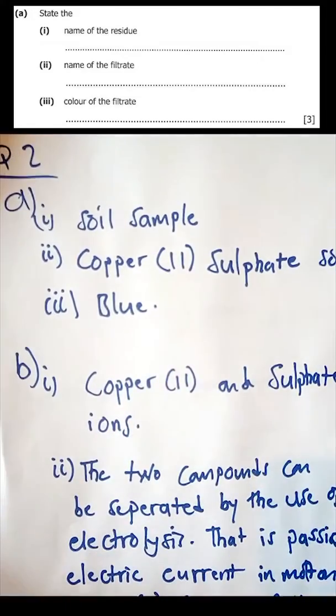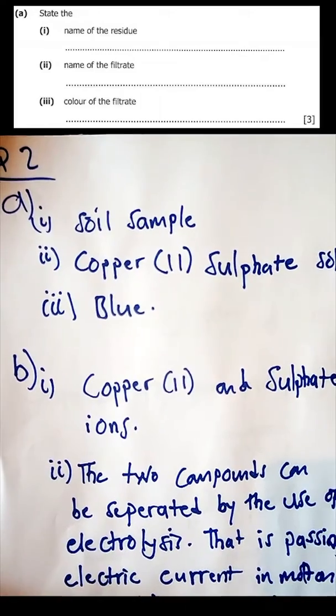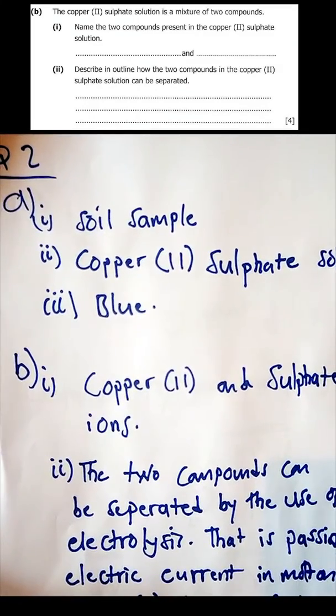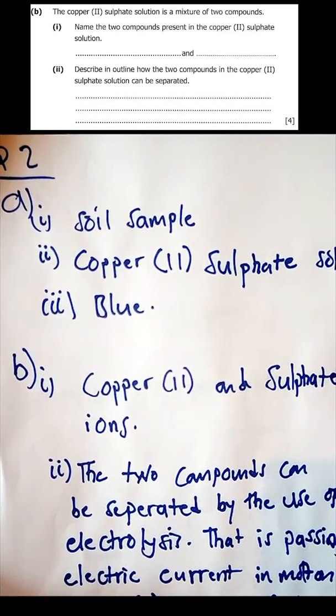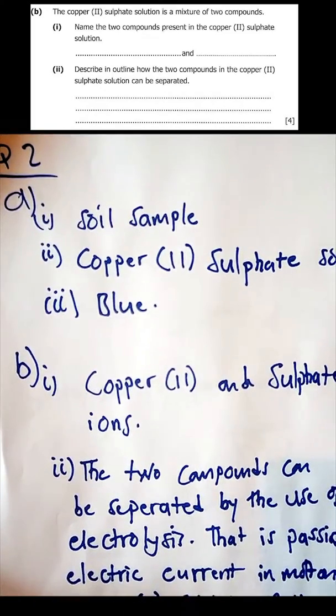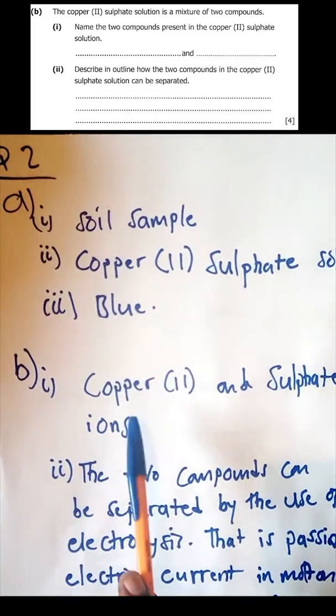Question 2b: the copper sulfate solution is a mixture of two compounds. Name the two compounds present in the copper sulfate. Two compounds present in the copper sulfate - you have copper(II) and sulfate ions.